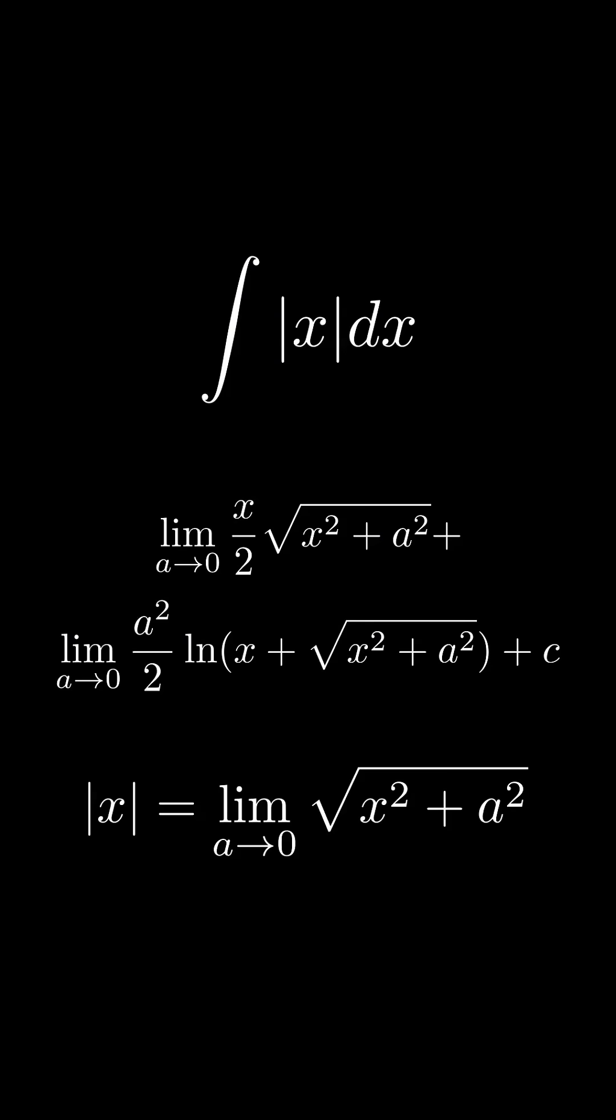Then now we have to solve the limit. So plug in 0 as a into the top. And this gives us 1 half times x times the square root of x squared, which is just the absolute value of x.